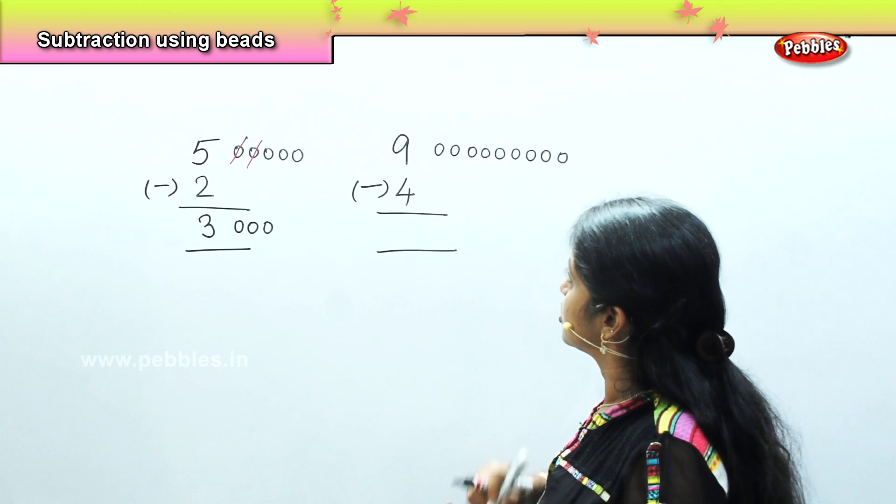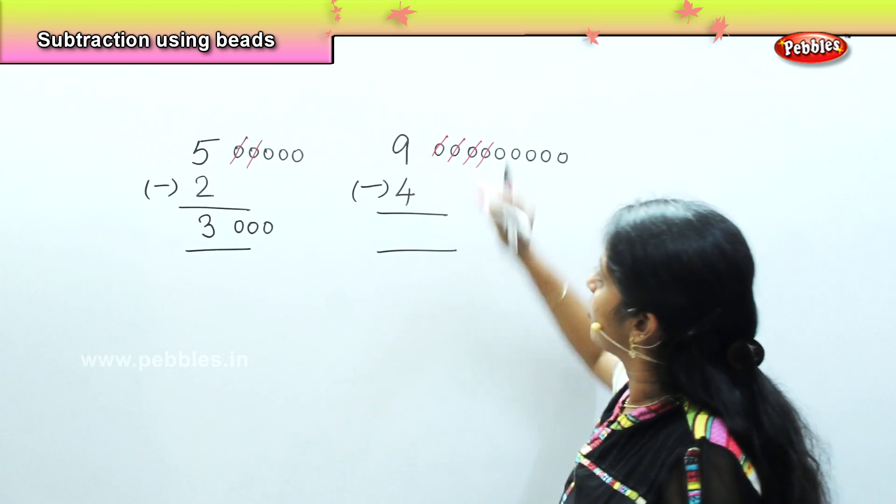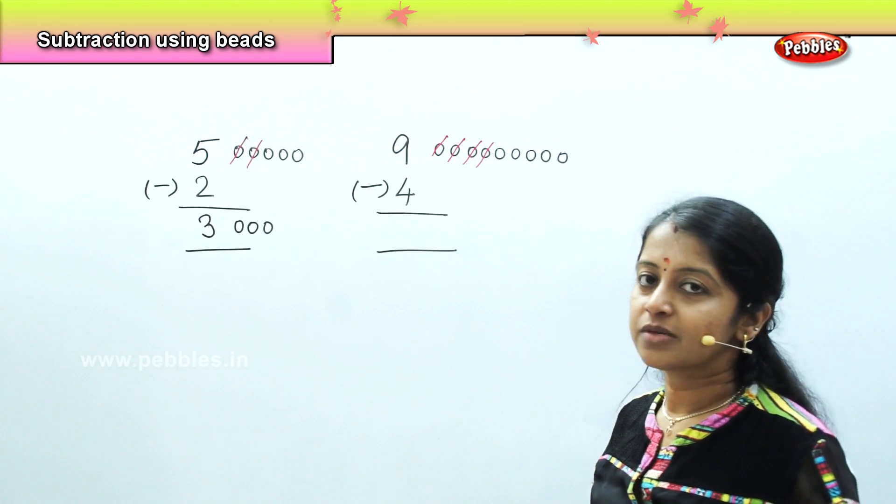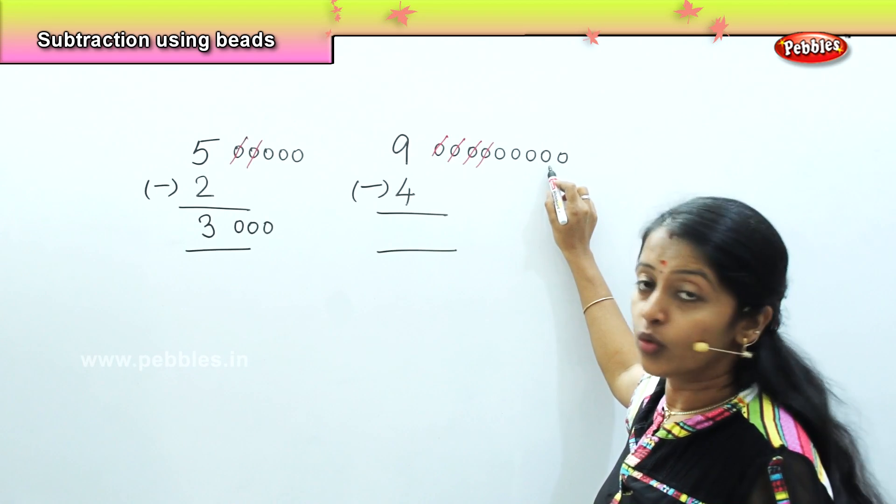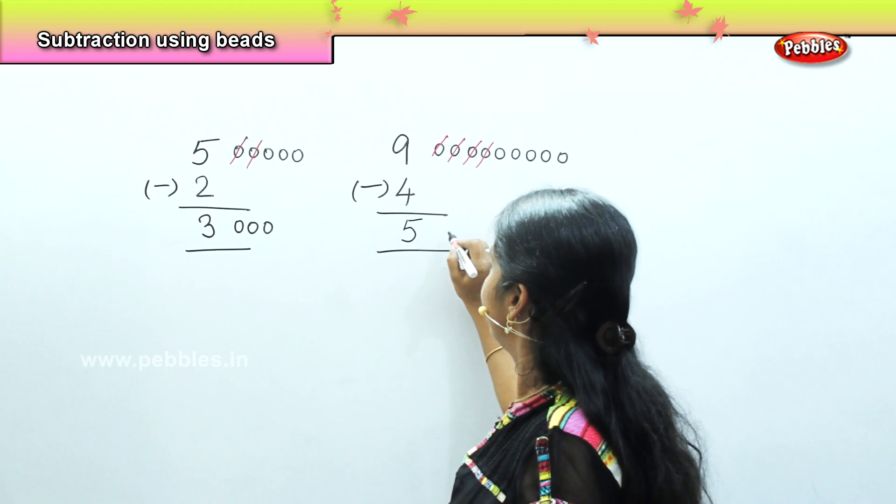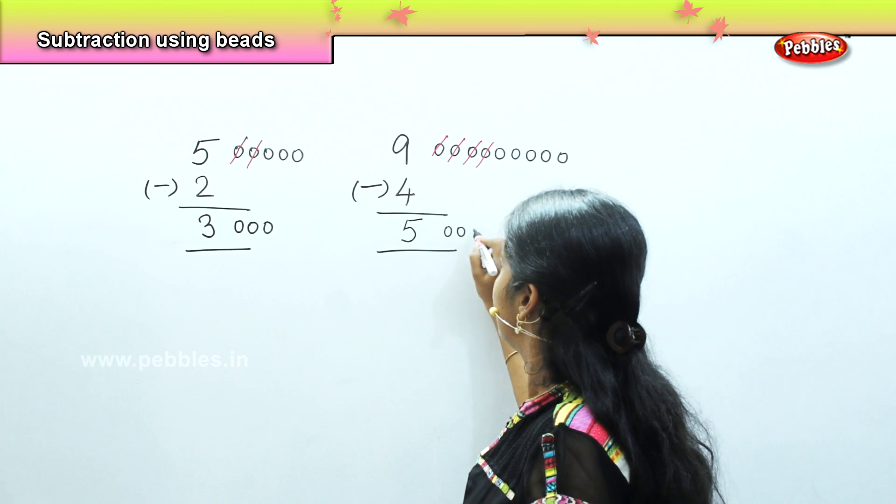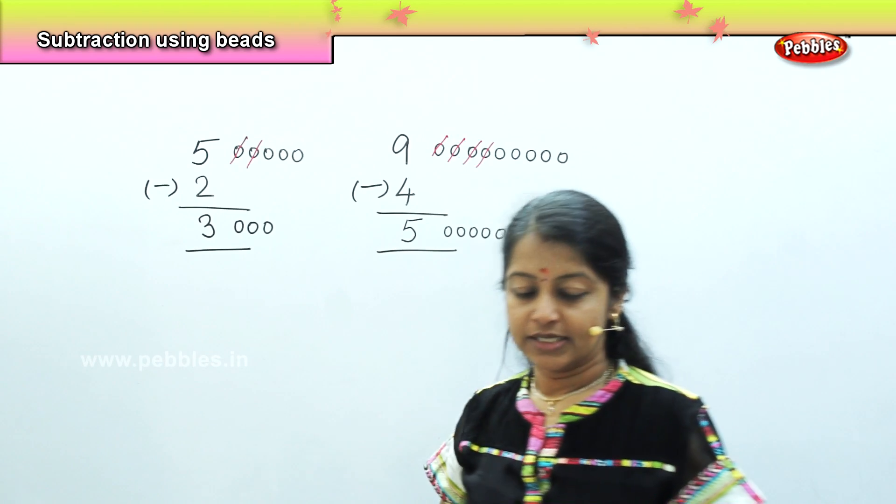4. So just strike off 1, 2, 3, 4. What is the number of beads remaining? 1, 2, 3, 4, and 5. So the answer is 5 and I will draw here 5 beads. Is it clear, children?